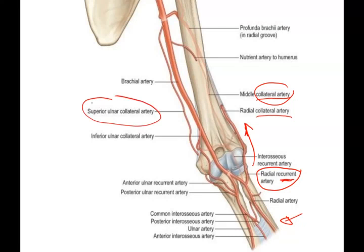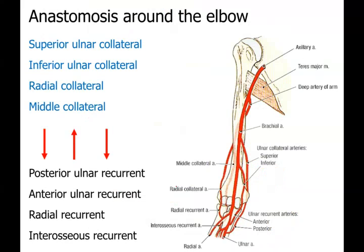For example, the superior ulnar collateral anastomoses with the posterior ulnar recurrent artery. If you are interested you can look at pictures to identify where they start and where the anastomosis is. We usually don't ask too many questions from the elbow anastomosis in detail - you can go through that slide if you want to learn about it.